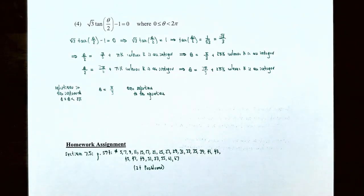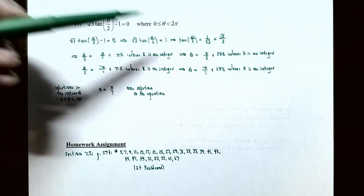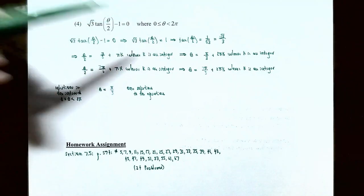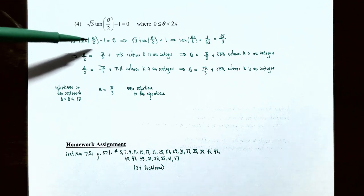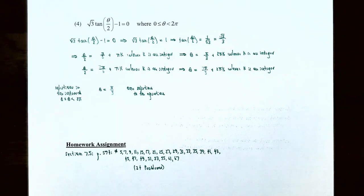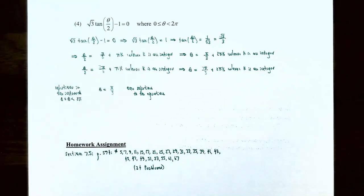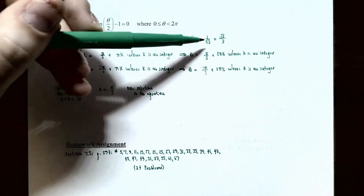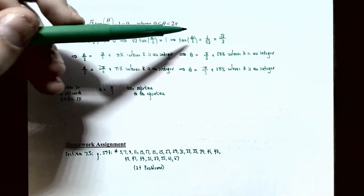Number four: the equation is square root three times tangent of theta over two minus one equals zero, where theta is between zero and two pi. This involves a half angle of the tangent function. Isolating the tangent: add one and divide by square root three, giving tangent of theta over two equals one divided by square root three. Rationalizing gives tangent of theta over two equals square root three divided by three.